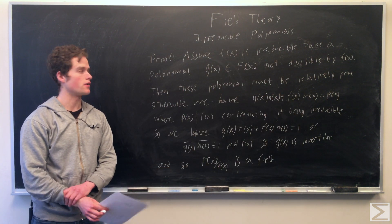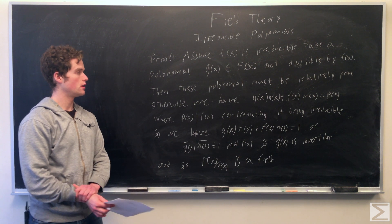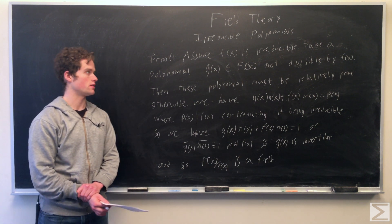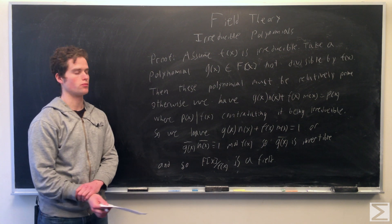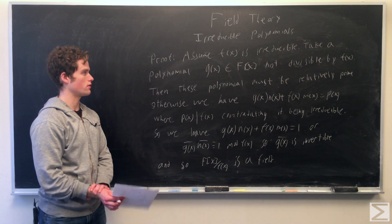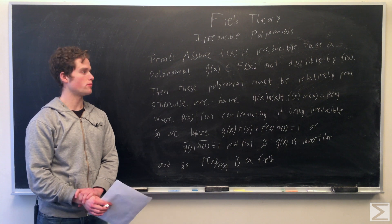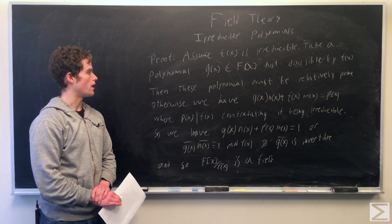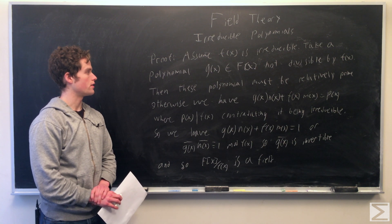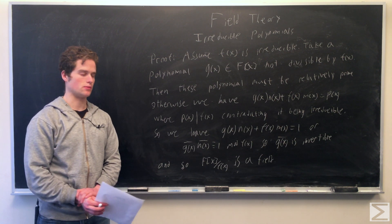So now we're going to assume f of x is an irreducible polynomial. We're going to take some polynomial g of x in the ring of polynomials with coefficients in big F, in our field F. We assume g of x is not divisible by f of x, so it's not zero in our quotient ring. And these two, g of x and f of x, must be relatively prime.